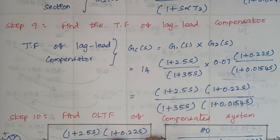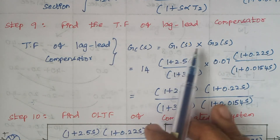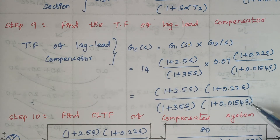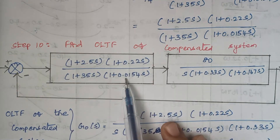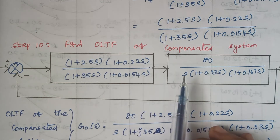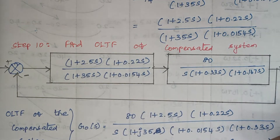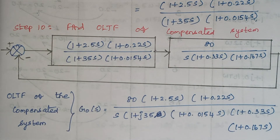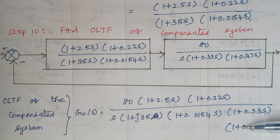The transfer function of the lag-lead compensator is the product of the lag and lead sections connected in series. Multiplying gives the compensator transfer function. The open loop transfer function of the compensated system is obtained by multiplying the given G(s) with the compensator in series. I'll wind up here as the second part — drawing the Bode plot for this compensated transfer function — is quite large and will be continued in the next video. I hope you understood the concept well; if you have any doubts, let me know in the comment section. Thank you.